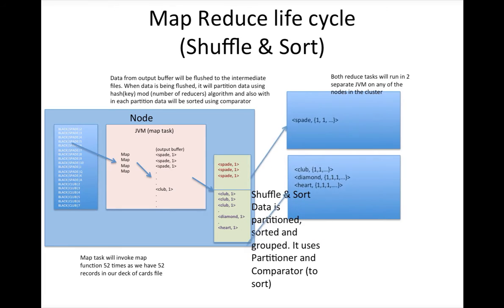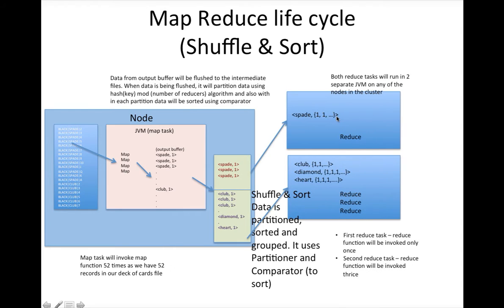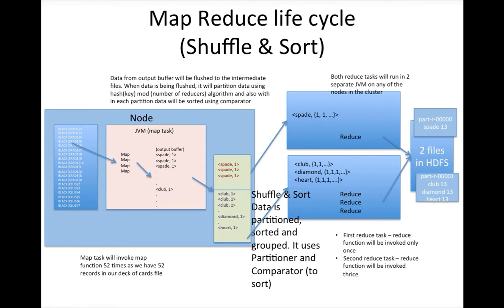The data is transformed into key and array-of-value tuples, which will be used to invoke the reduce function. As part of the first reduce task, since there is only one key, the reduce function will be invoked only once, and using that key we can get the count and store it in HDFS. Similarly, for the second reduce task, since there are three keys, the reduce function will be invoked three times, and for each key we get the count and the output is written to HDFS.